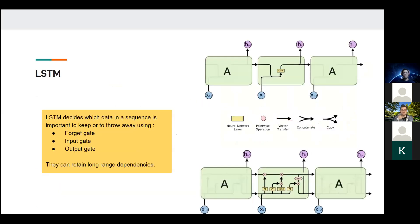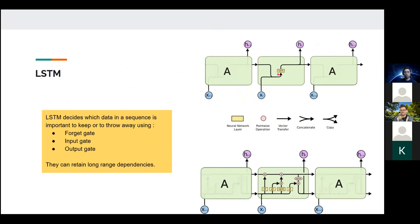To address this, people came up with LSTM — Long Short-Term Memory — which targeted this problem by introducing three gates: the forget gate, input gate, and output gate. As you can see, rather than the simple standard RNN, LSTM has a more complicated machinery. The very simple RNN just has a tanh nonlinearity, but LSTM introduces these control gates.